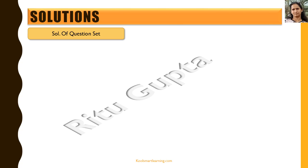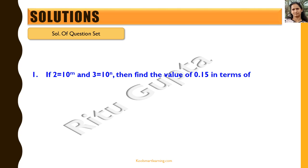Let's now look at the solutions for these questions. We are given 2 is equal to 10 raised to power m and 3 is equal to 10 raised to power n. To find the value of 0.15, we first write 0.15 as 15 by 100 and simplify it, which becomes 3 by 20.